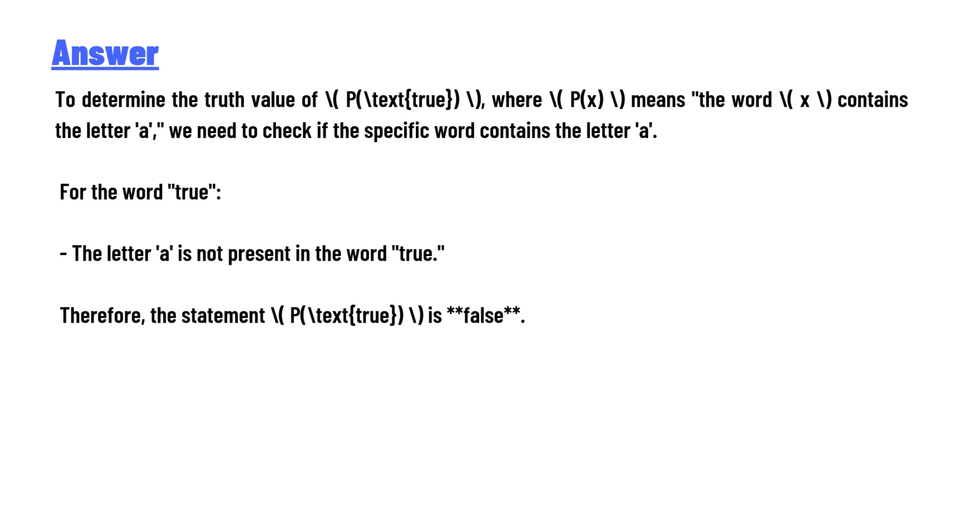The answer of the question is: to determine the truth value of P(true), where P(x) means 'the word x contains the letter a', we need to check if the specific word contains the letter 'a'. For the word 'true', the letter 'a' is not present in the word 'true'. Therefore, the statement P(true) is false.